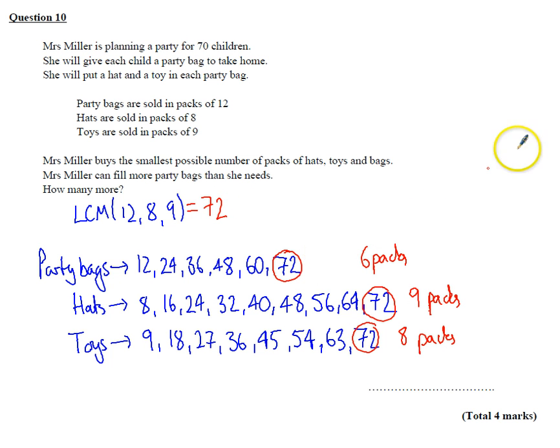How many more is that than she needs? Well, she wants to make a party for 70 children, so she's going to have 2 extra. Done.